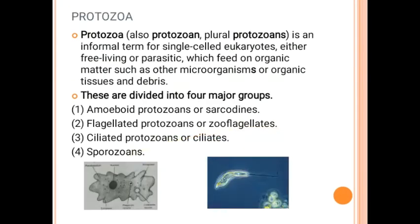Next we are going to study protozoa. Protozoans are single-celled eukaryotes — single-celled but with a well-defined nucleus and well-defined genetic material. Protozoans may be free-living or they may be parasitic, depending on others for their food, living in the body of other animals.